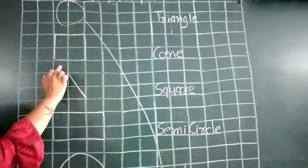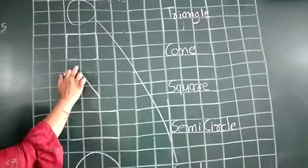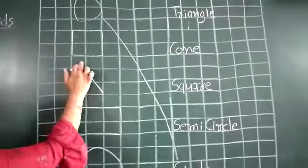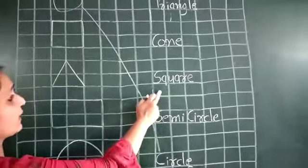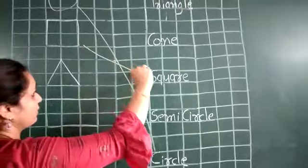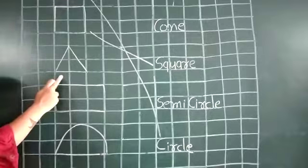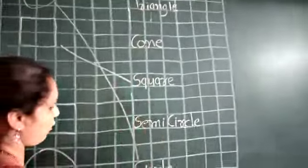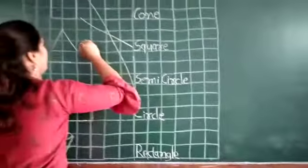Now what is this? This is square. What is this? This is square. Where is square? Found it. Here is square. Magic. Next. What is this shape? This is triangle. Where is triangle? Found it. Here is triangle. Magic.